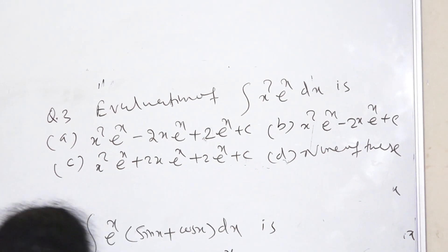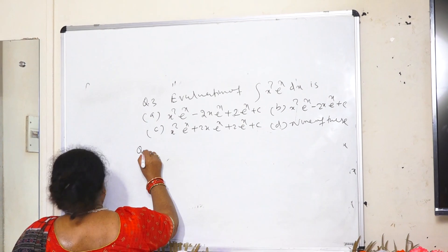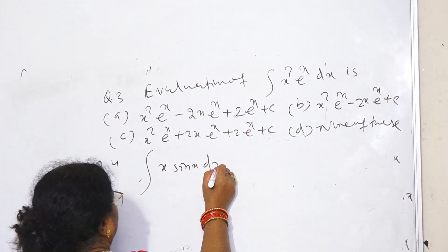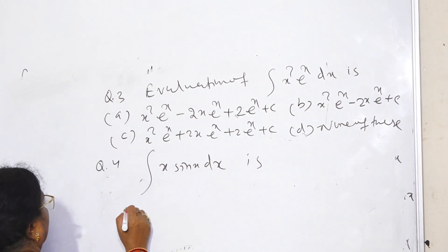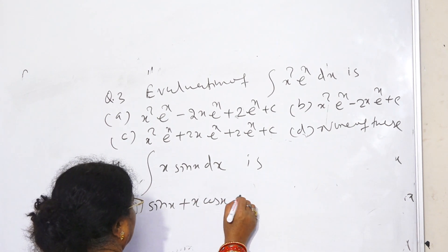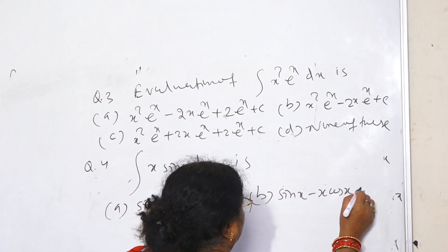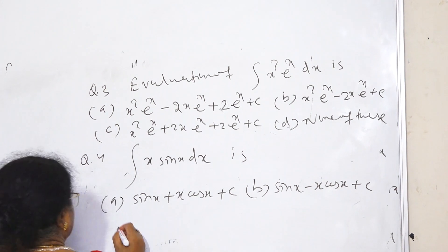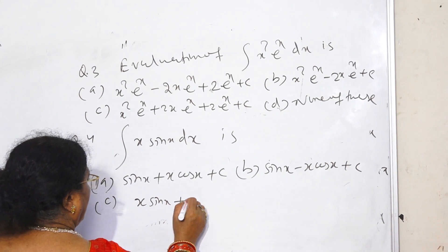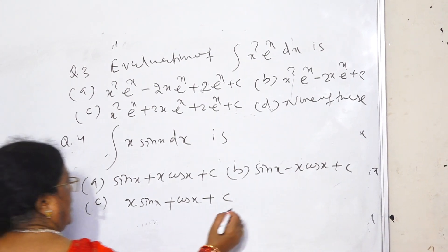Question number 4: Integral of x·sin x dx. A: sin x plus x·cos x plus c. B: sin x minus x·cos x plus c. C: x·sin x plus cos x plus c. D: none of these.